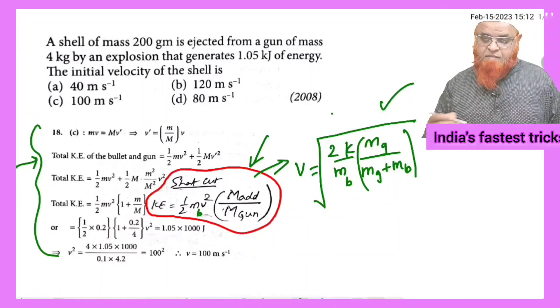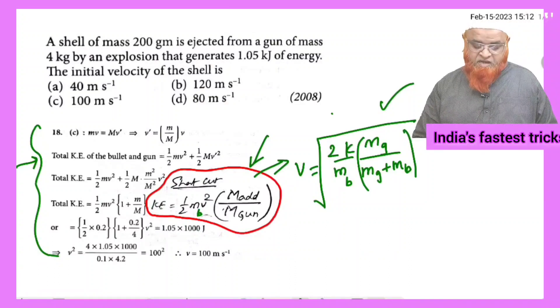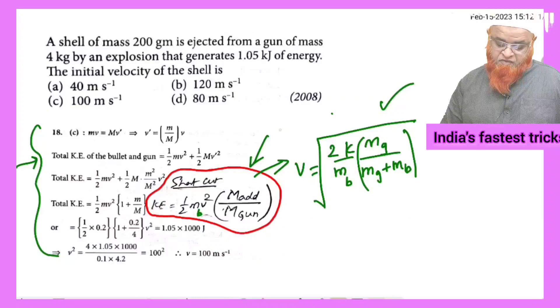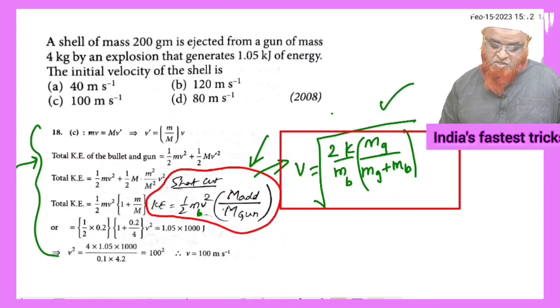Into mass of the gun by mass of the gun plus mass of the bullet. So this is going to be your shortcut formula. Hope you have understood.